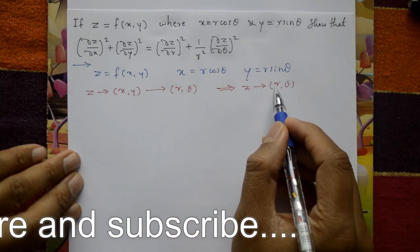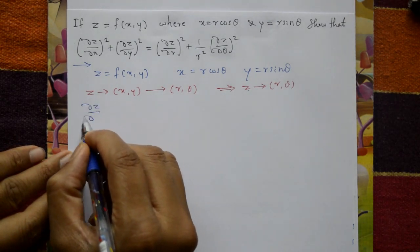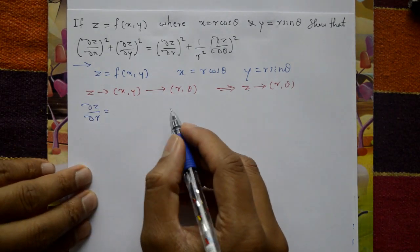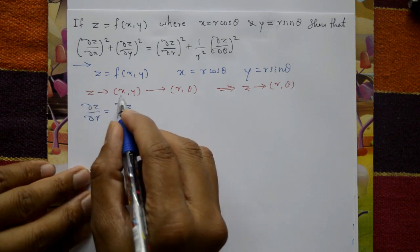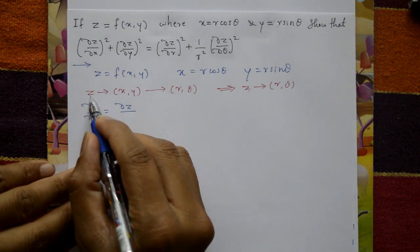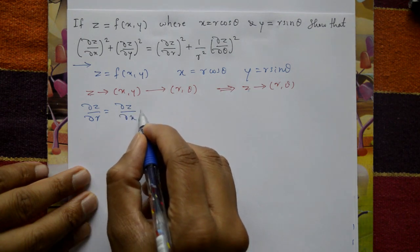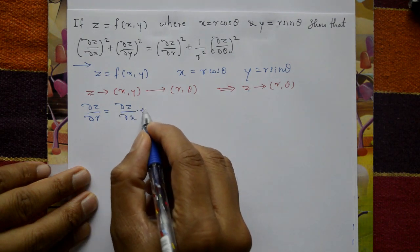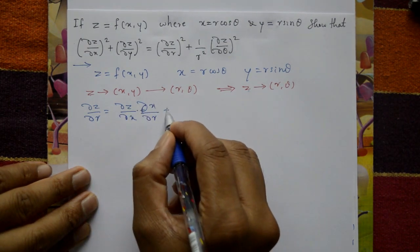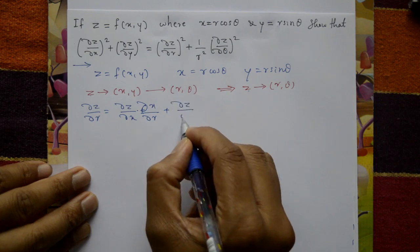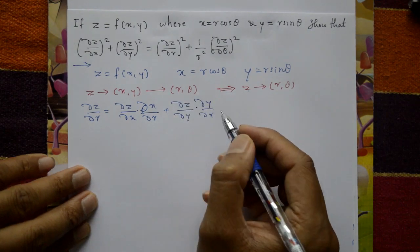dou z by dou r is equal to dou z by dou x into dou x by dou r plus dou z by dou y into dou y by dou r.